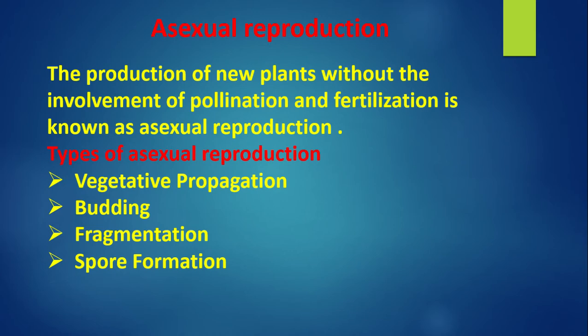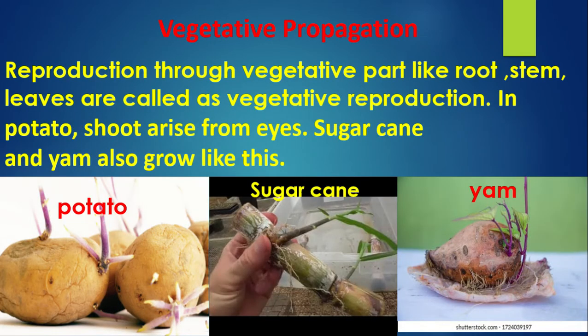Asexual reproduction: The production of new plants without the involvement of pollination and fertilization is known as asexual reproduction. Types of asexual reproduction: vegetative propagation, budding, fragmentation and spore formation. Vegetative propagation: reproduction through vegetative parts like roots, stem and leaves is called vegetative reproduction. In potato, shoots arise from eyes; sugarcane and yam also grow like this.